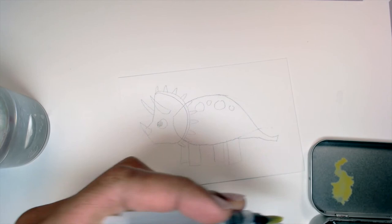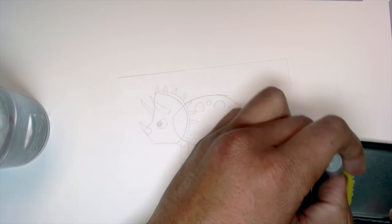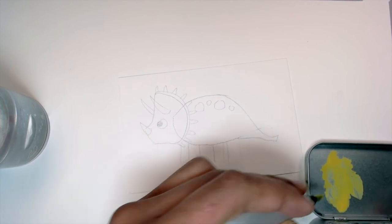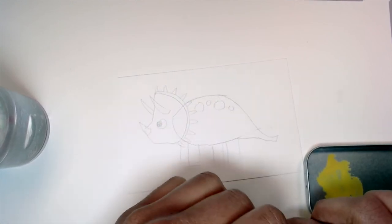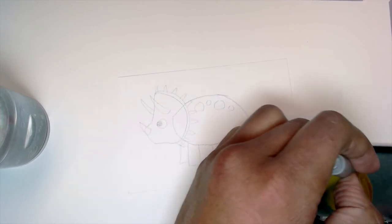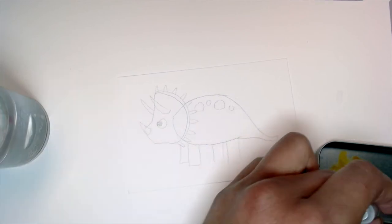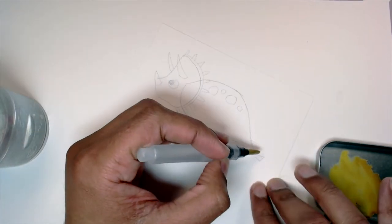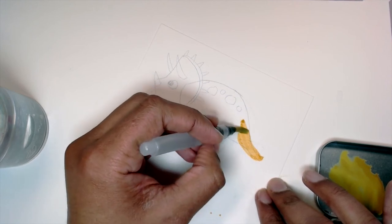So I'm taking a little bit of yellow in my palette. And then I'm going to take a little bit of the brown. Let's see how that looks like. Okay. Looks good.